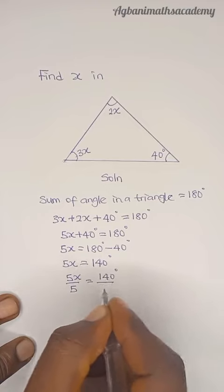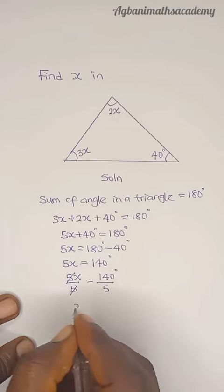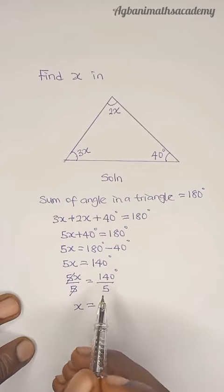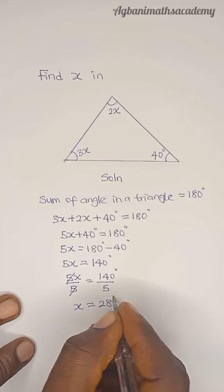So 5 is going to cancel out 5 to give us x. So x equals 140 degrees divided by 5, which is going to give us 28 degrees.